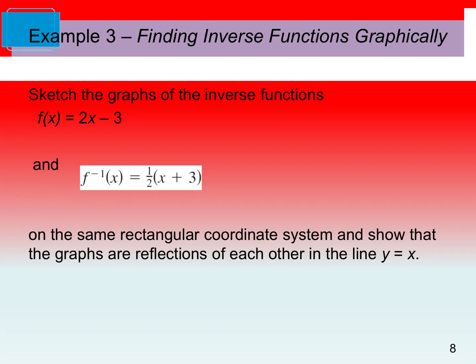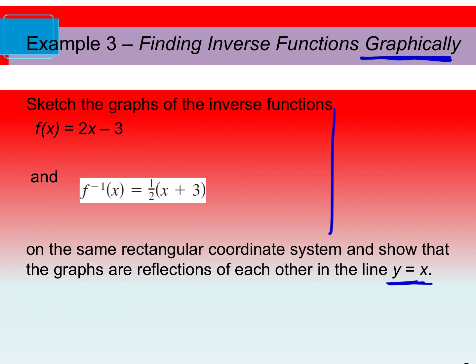Next we're going to find inverses graphically. We'll graph our two functions and see if they are reflections of each other over the y = x line. We've got two lines here so it's straightforward to graph. My first line — I'll start by graphing my y-intercept at negative 3, and then our slope is 2 so we go up 2, right 1. Once you have at least two points, connect your dots with a straight line. That would be our f(x).